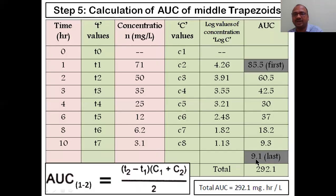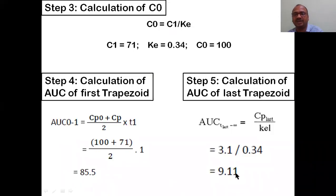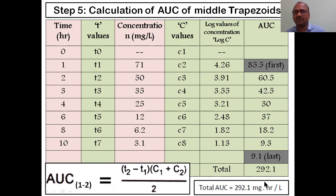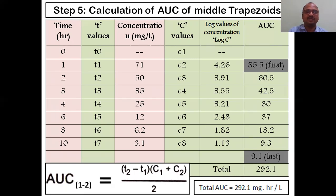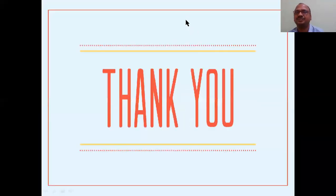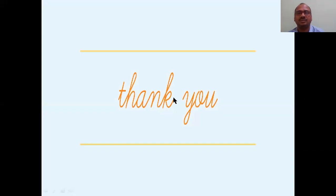The final total AUC is 292.1. That is the complete calculation. You should practice problems and compare with these values. I will end my session here.